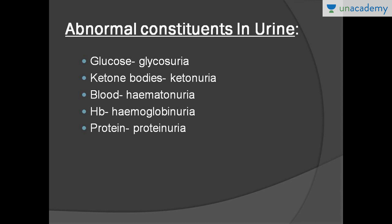Urine basically has a lot of constituents like water, urea, uric acid, ammonia, and various other things like sodium. But there are a few things which are not normally present in urine. Their presence in urine is a danger sign and may be physiological in some cases but is mostly pathological.